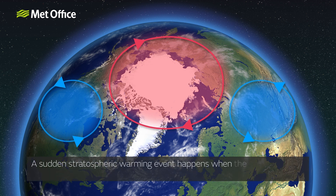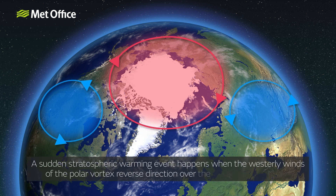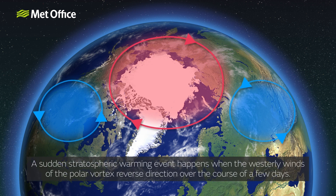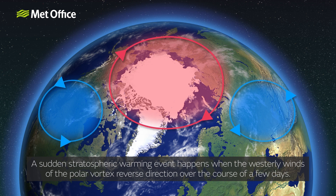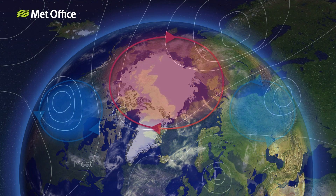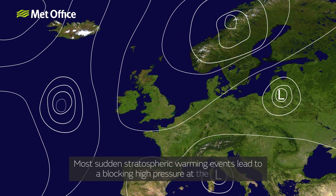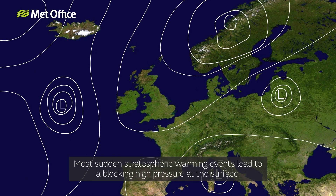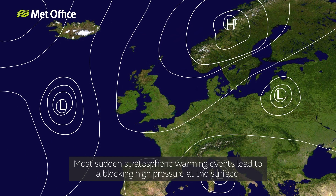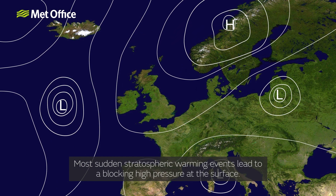A sudden stratospheric warming event happens when the westerly winds of the polar vortex reverse direction over the course of a few days. Most sudden stratospheric warming events lead to a blocking high pressure at the surface.